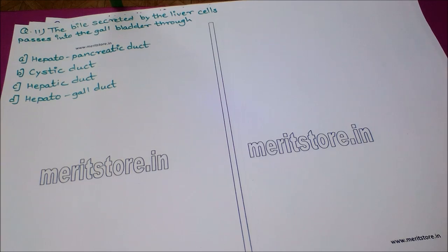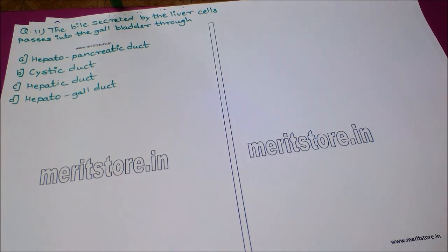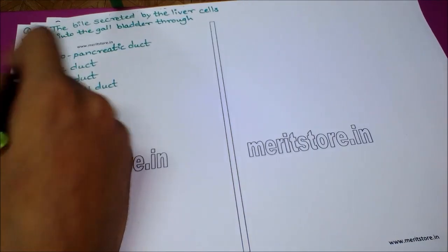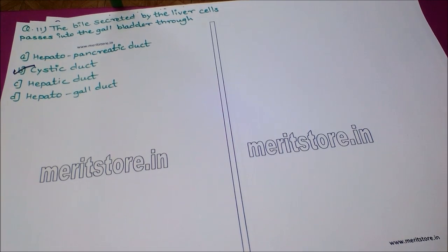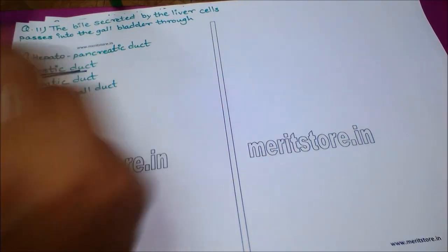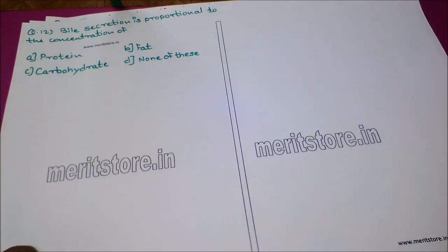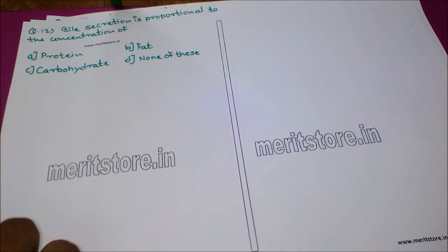The next question: bile secreted by the liver cells passes into the gall bladder through — option A: the hepatopancreatic duct, option B: the cystic duct, option C: the hepatic duct, option D: the hepatogall duct. The correct answer is option B, the cystic duct. Bile juice passes into the gallbladder from the liver via the cystic duct.